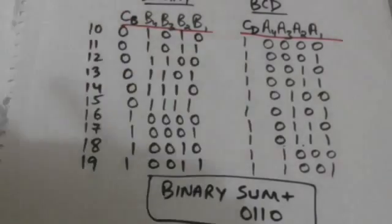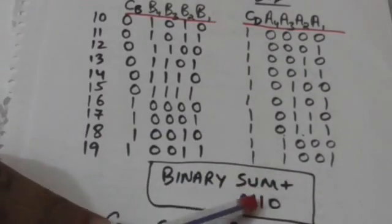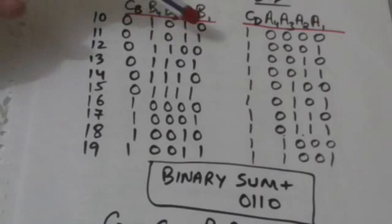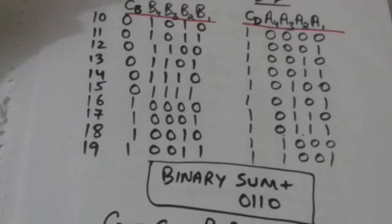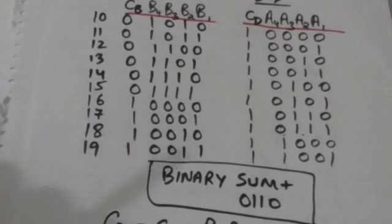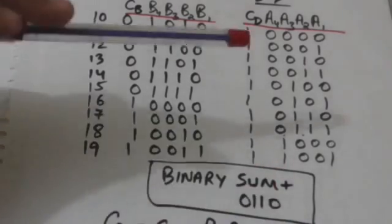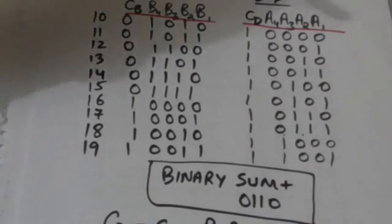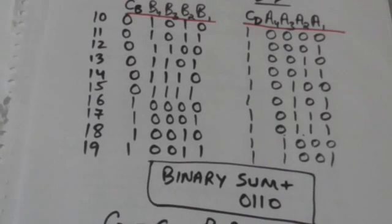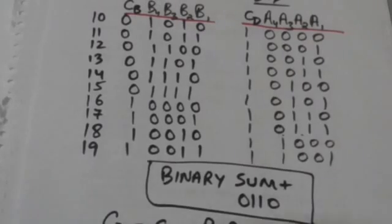To convert the output of the 4-bit binary adder from binary form to BCD form, we need to add the binary number 0110 to the output of the 4-bit binary adder. So when the value of the sum produced by the 4-bit binary adder is between 10 and 19, we add 0110 to the output to get the result in the required BCD form.